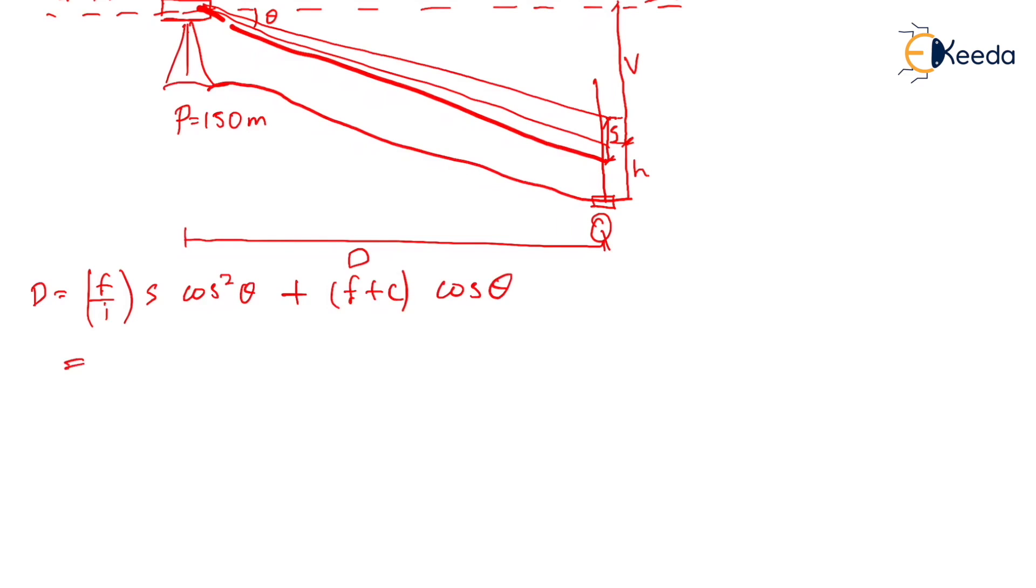By using this formula, we put the values. F/I is 100, S we have calculated as 1.45, cos theta is 9 degrees 30 minutes squared, plus F+T. Let us assume that the instrument is fitted with an anallatic lens, so F+T will be 0. The whole term will be 0. So by using the formula, we will get the horizontal distance equal to 141.05 meters.